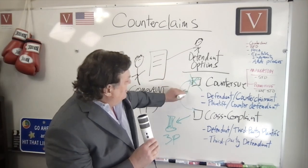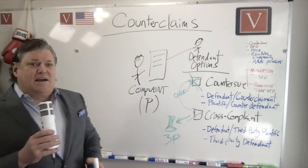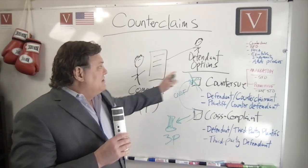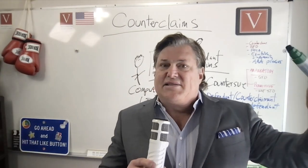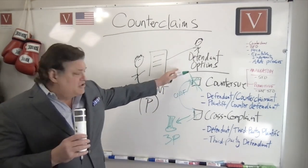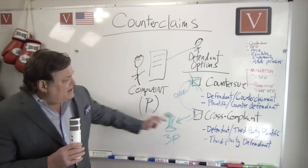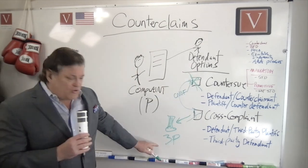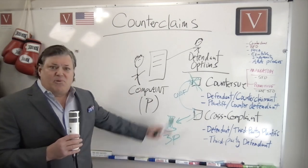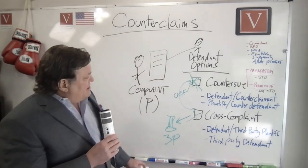You could file a countersuit — or you could do your answer, motion to dismiss, answer with affirmative defenses — you can also file a cross complaint. What's a cross complaint? A cross complaint is a claim against a third party. It's not the plaintiff, it's not you — it's some third party. You're saying: wait, if you're suing me for breach of contract, it's not my fault. It's this third party's fault. I'm going to cross-claim against them, bring them in, file a complaint and summons, serve them, and make them come in and answer.